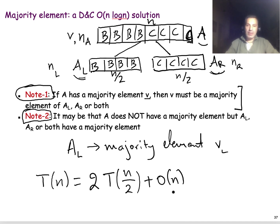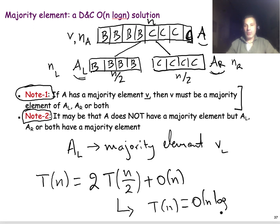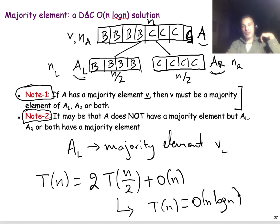This recursion is T(N) = 2T(N/2) + O(N) — the same as mergesort — giving T(N) = O(N log N). Can we solve this problem faster than O(N log N)?